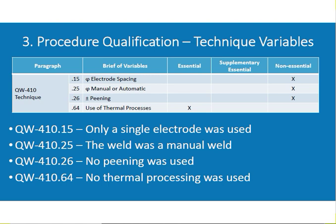QW-410.9 multiple to single pass or multiple pass per side is a supplementary essential variable. QW-410.10 single or multiple electrodes is also supplementary essential. QW-410.11: the weld was made outside the chamber. QW-410.15: single electrode was used. The reason for noting electrode spacing is that in some pipe manufacturing plants, multiple electrodes are used simultaneously at root, fill, and cap passes.